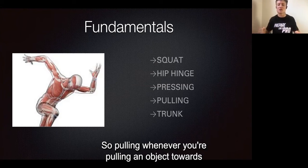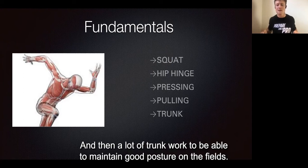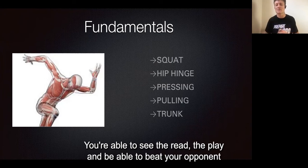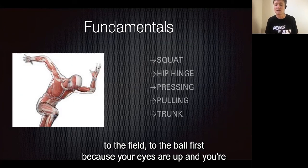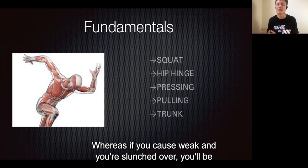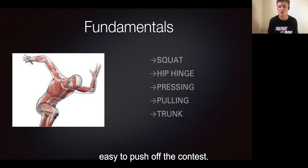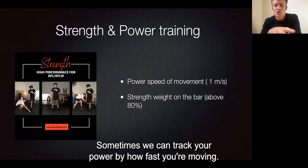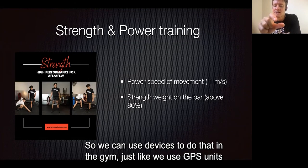Pulling — whenever you're pulling an object towards you, like a bent-over row. And then a lot of trunk work to maintain good posture on the field. If you're in a good upright position, your eyes are up, you're able to read the play and beat your opponent to the ball, because you're standing in a dominant position. Whereas if your core is weak and you're slumped over, you'll be easy to push off the contest.